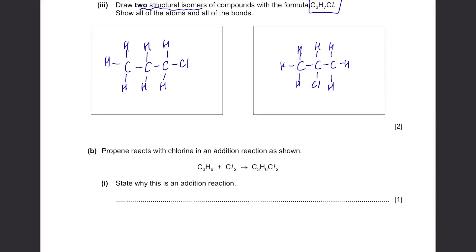Part B: Propene reacts with chlorine in an addition reaction as shown. State why this is an addition reaction. You can literally say it's because two molecules join together to make one molecule. Or you can say that it's because there's only one product here. And another answer can be that C3H6, it's an alkene. It has C=C bond. But if it becomes C3H6Cl2, the C=C bond will be broken and just become C single bond. Therefore, you can say the double bond becomes single bond.